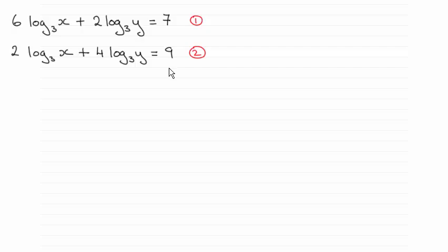I can choose to either eliminate the terms that are log x in base 3, or the terms in log y in base 3. If I wanted to eliminate these two terms then I would have to bring this up to a 6 by multiplying this equation through by 3. Or, if I want to eliminate the log y terms in base 3, I'd need to bring this up to a 4 by multiplying the top equation through by 2.